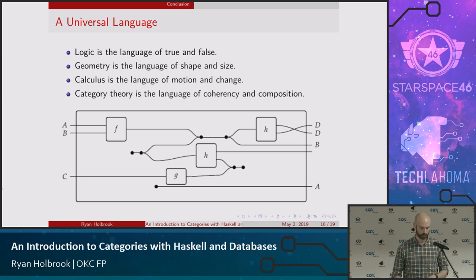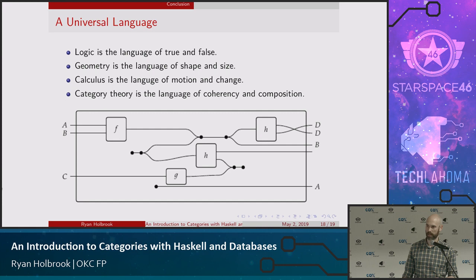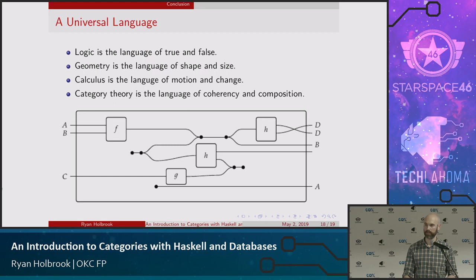So to summarize: category theory is the language of coherency and composition. Just like logic deals with true and false, and geometry with shape and size, category theory applies whenever you have things you're trying to compose together to make sure your system doesn't break. If there's coherency, you're probably talking about a category somewhere. Thank you.